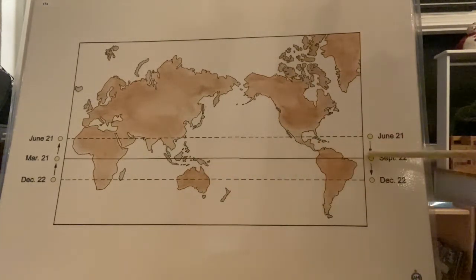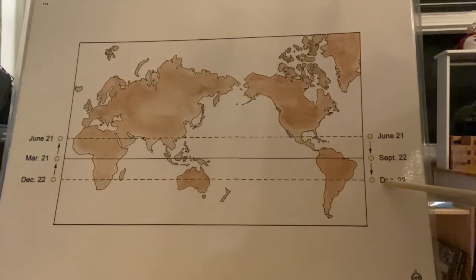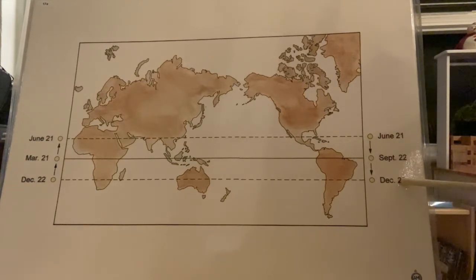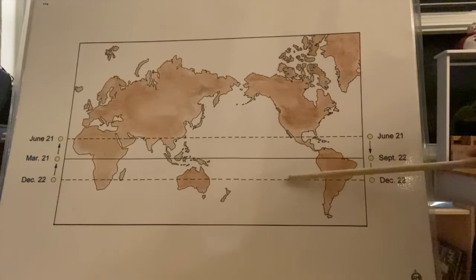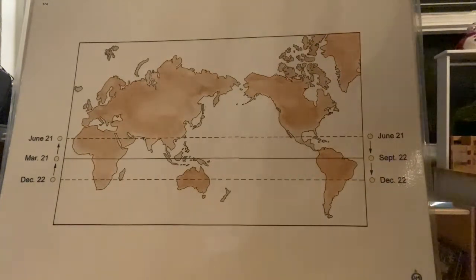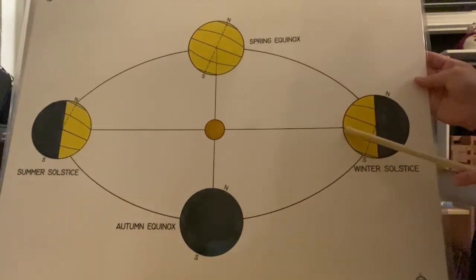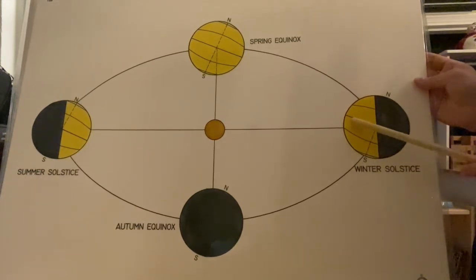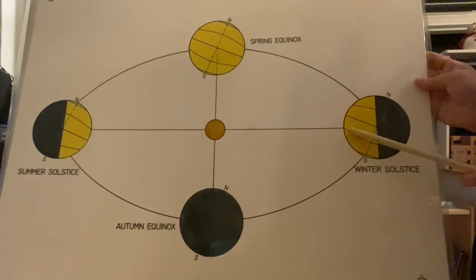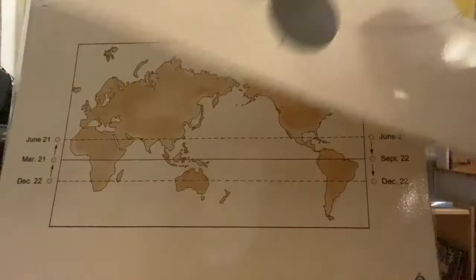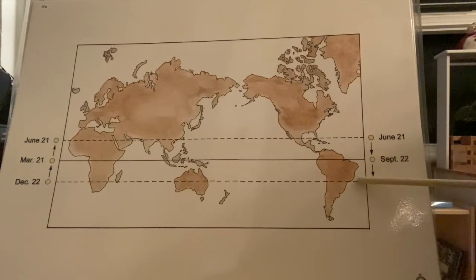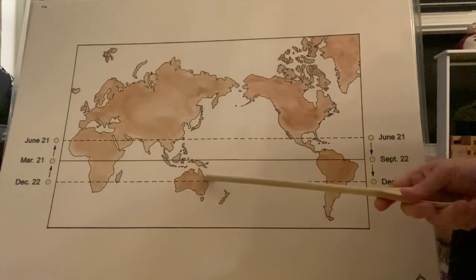The Earth continues to go around the sun and we end up around December 22nd. December 22nd is our winter solstice, and this is the farthest south the perpendicular rays of the sun will get — right on this line, the Tropic of Capricorn. Remember, the red arrow points here — this is the farthest south those perpendicular rays are going to get. Everything else is oblique, so only from the equator to the Tropic of Capricorn are getting perpendicular rays.